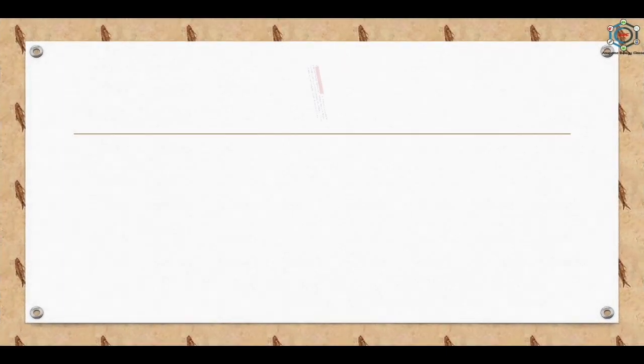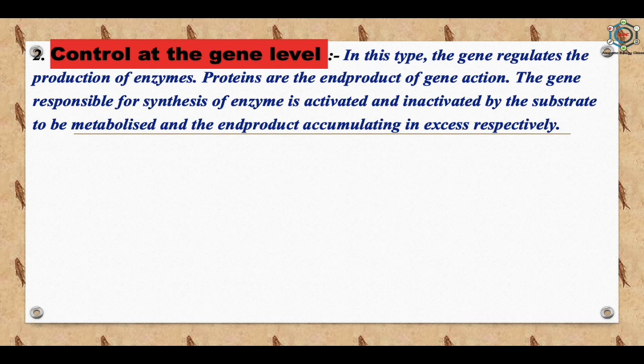Control at the gene level: the gene regulates the production of enzymes, and proteins are the end products of gene action. The gene responsible for the synthesis of enzymes is activated by the substrate to be metabolized and inactivated by the end product accumulating in excess.